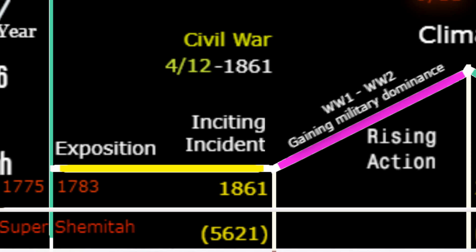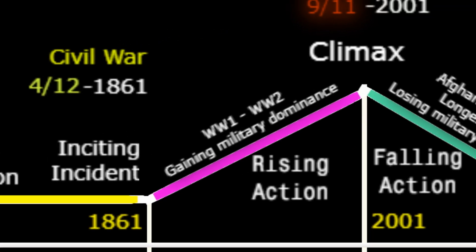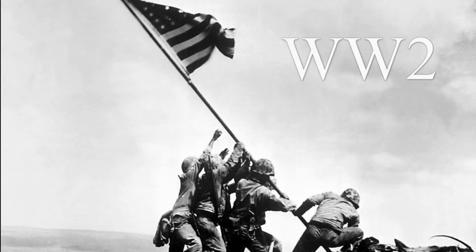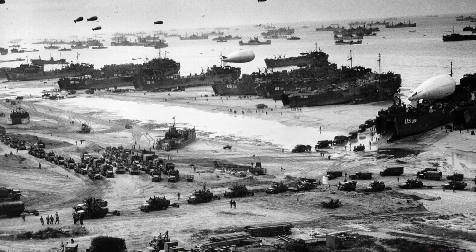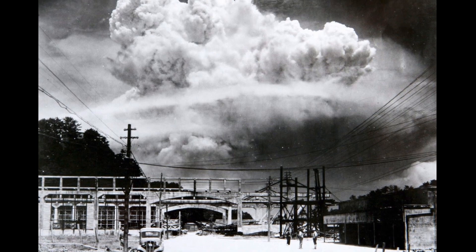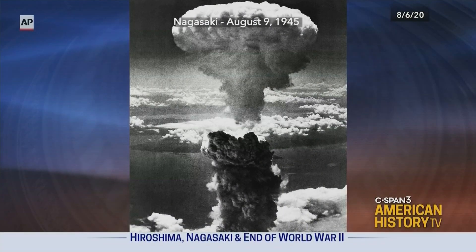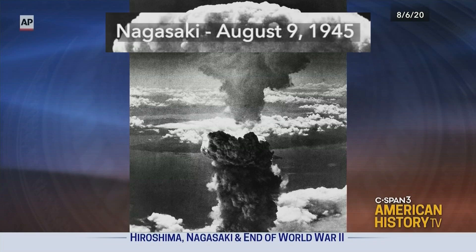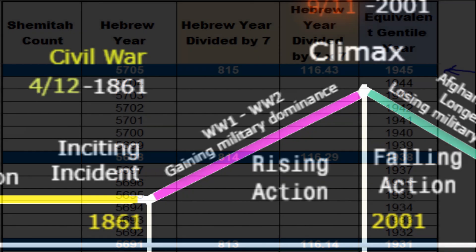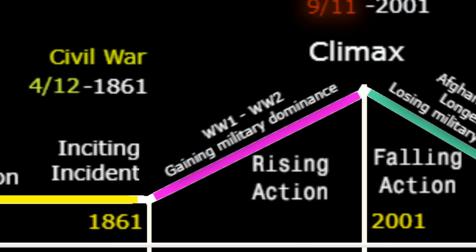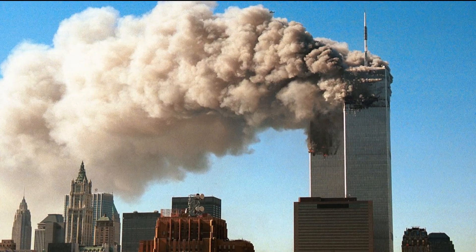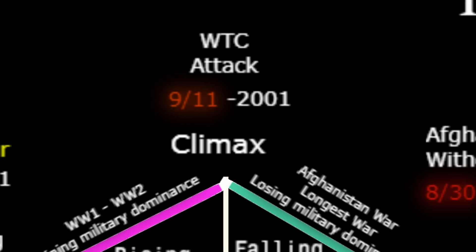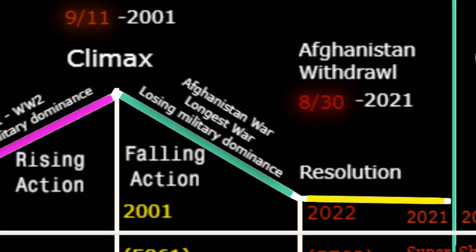From the Civil War, America through World War One and World War Two continued perfecting its military might. America's military power was displayed on a Shemitah year when the two atomic bombs were dropped ending World War II in 1945 — that's a Shemitah year — the first time nuclear weapons had been used in warfare. This gives further credence to the rising action representing America gaining military dominance, leading up to 9/11 of 2001 and the climax of the story.